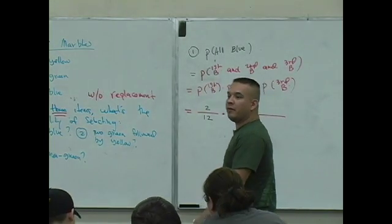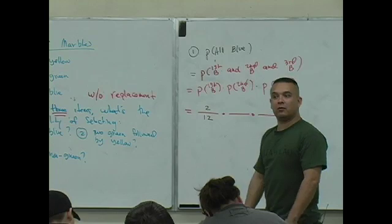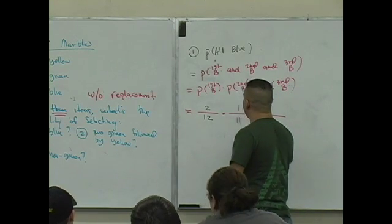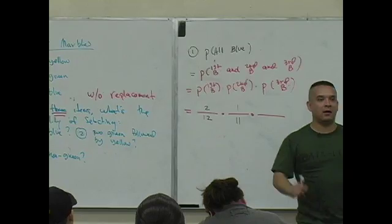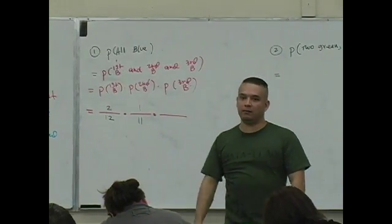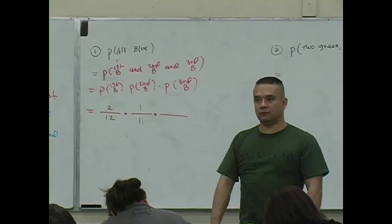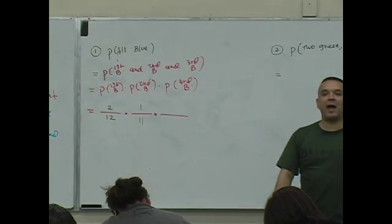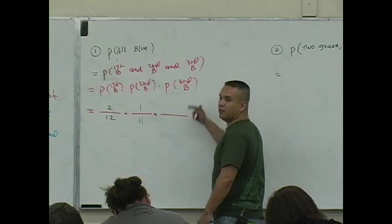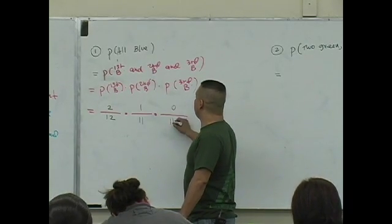Reach in the bag. What's the probability that the second marble is blue? One out of eleven. What do you do with the second blue marble? Out the window. Reach in the bag. What's the probability that the third marble you select is blue? Zero out of how many marbles? Ten.